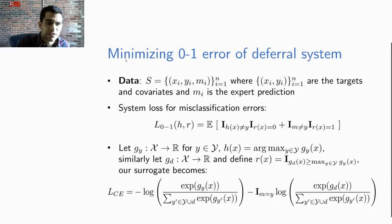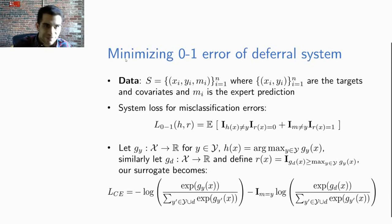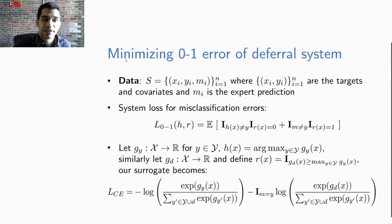As usual we will learn Y capital Y functions for each label in our label space g_y and our classifier is going to pick the maximum among these capital Y functions. Similarly we also learn an additional function g_d and we define our rejector by being one if g_d is bigger than the maximum among all of the rest of the Y functions.